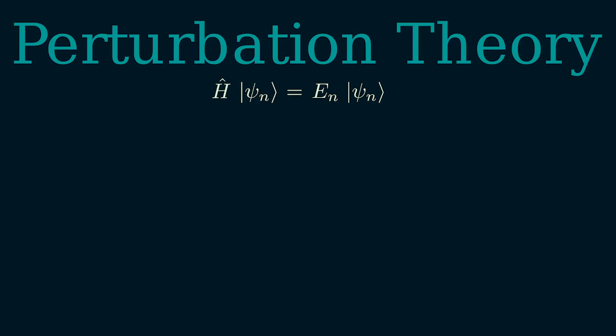Let's say that this H can be written as H0 plus lambda H1. Here, lambda is assumed to be a small constant, and we'll get back to what small exactly means. But the point is that the term lambda H1, which is also called the perturbation of the system, should be small.